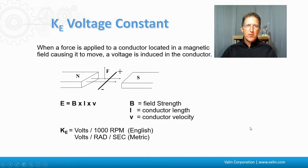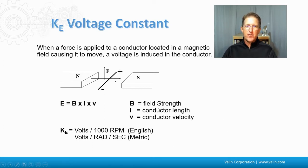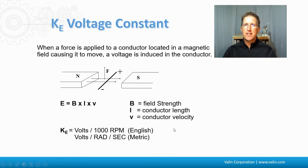There's also a KE voltage constant, defined by when a force is applied to that conductor located in the magnetic field, causing it to move — a voltage is induced in that conductor. This is the product of the field strength, the conductor length, and this time the conductor velocity. It ends up with units of volts per thousand RPM or volts per radian per second, again depending on English or metric.